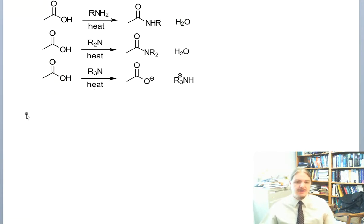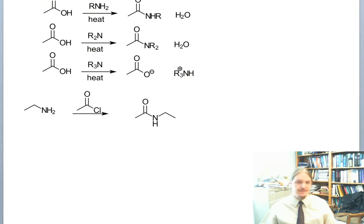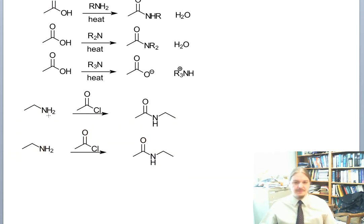And so a complementary route would be to have an amine and react it with either the acid chloride to generate the amide or instead of using the acid chloride to use the acid anhydride. Both of these will work.